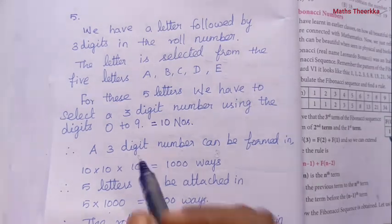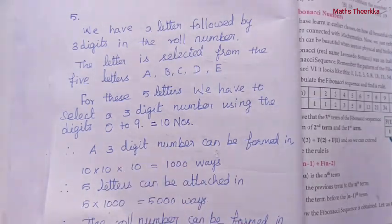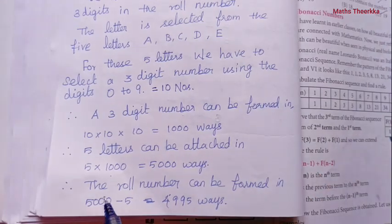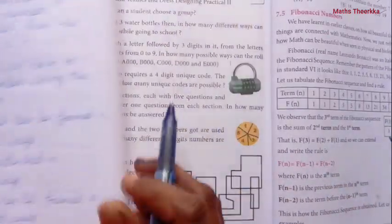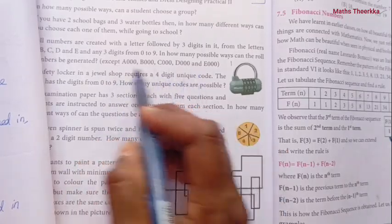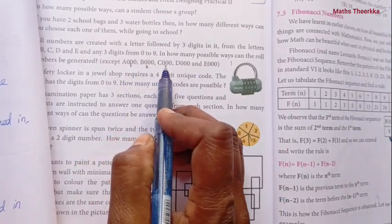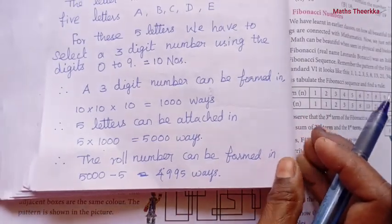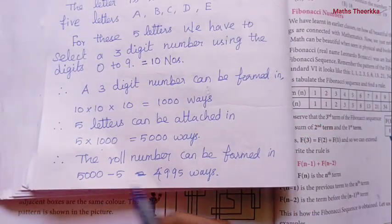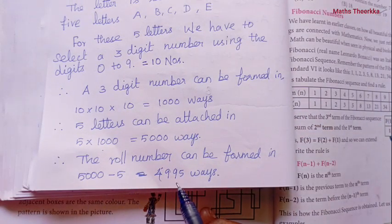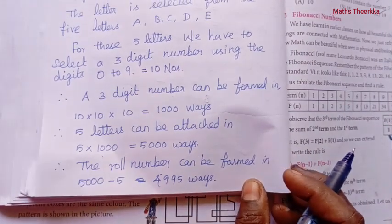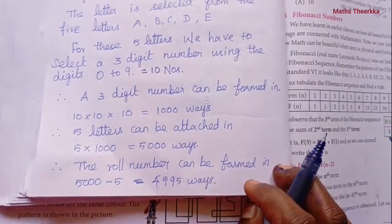However, roll numbers using all zeros (000) must be excluded. So the answer is 5,000 minus 5 = 4,995 possible roll numbers, since each of the 5 letters paired with 000 is invalid.